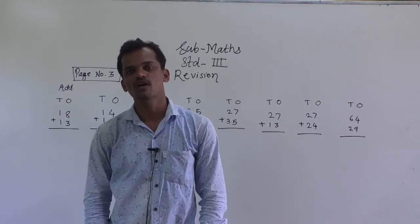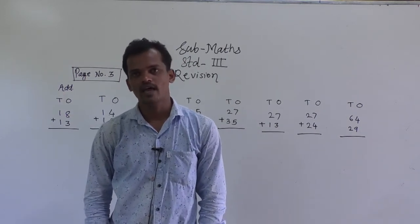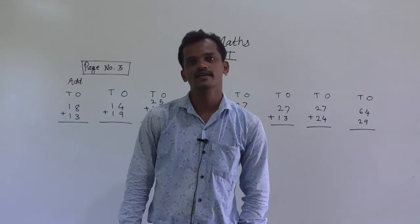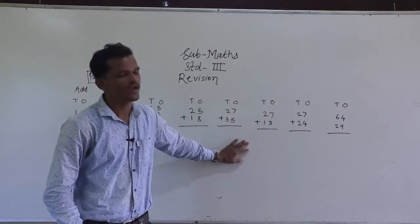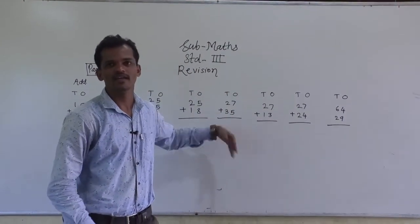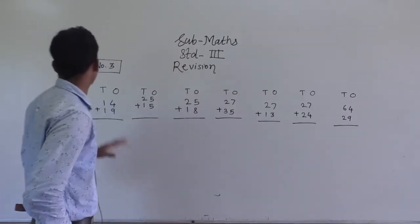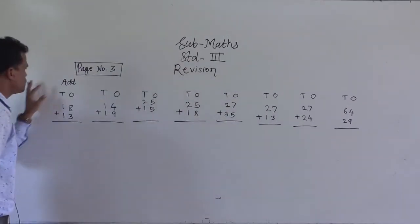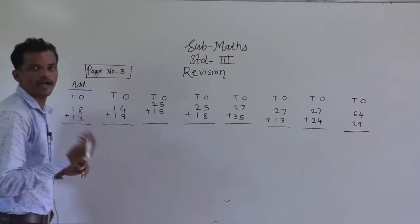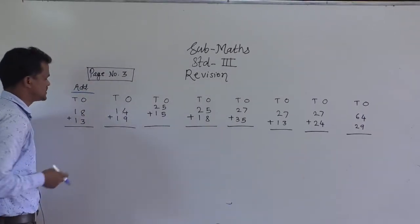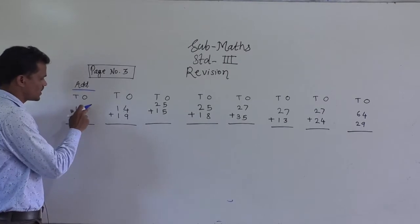Dear students, today we will solve page number 3 and 4 of the revision paper. Some examples I will show you and the remaining examples you have to solve. So, page number 3, first example — we add, means you have to do addition. Here, 2-digit numbers are there and we have to add that number.